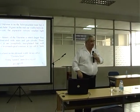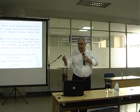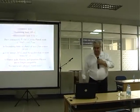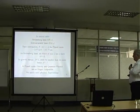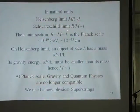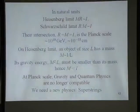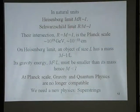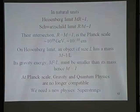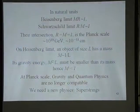We don't understand what it is due to. In these natural units, the Heisenberg limit is mr = ℏ = 1, and the Schwarzschild limit is r/m = G = 1. At the intersection between the two, we have r = m = 1. This is what we call the Planck scale, corresponding to a mass of about 10 to the 19 proton masses and a distance of about 10 to the minus 32 centimeters.